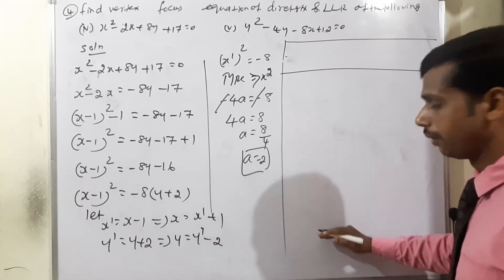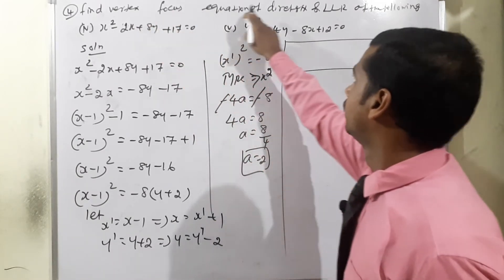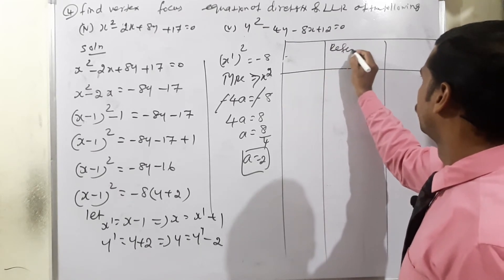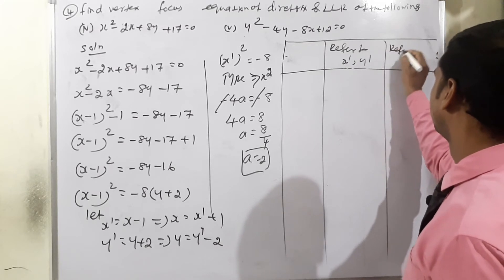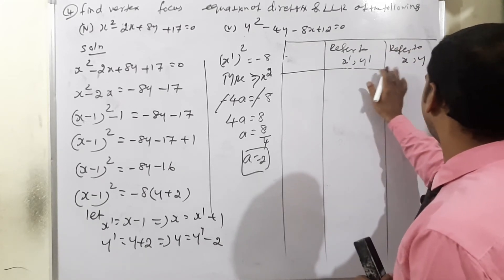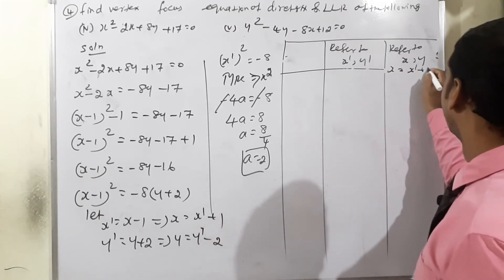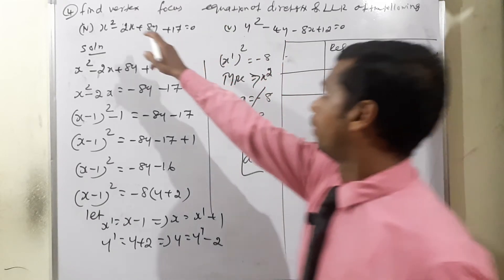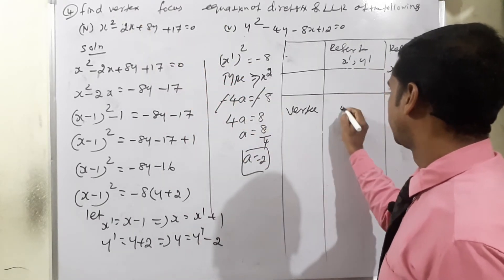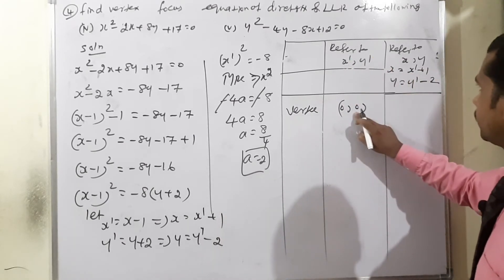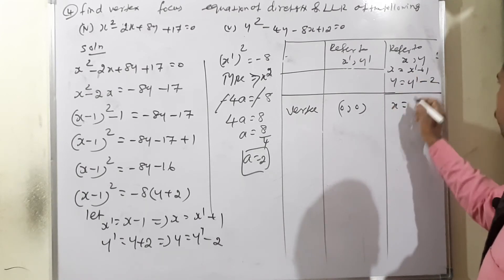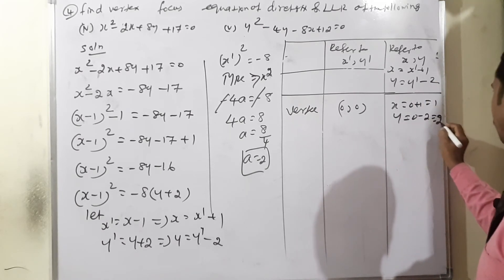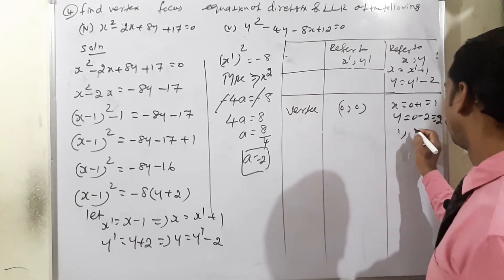Now we set up a table with vertex, focus, equation of directrix, and LLR. Referring back: x = x' + 1 and y = y' - 2. For vertex in x'y' system: (0, 0). So x = 0 + 1 = 1 and y = 0 - 2 = -2. Therefore vertex in xy is (1, -2).